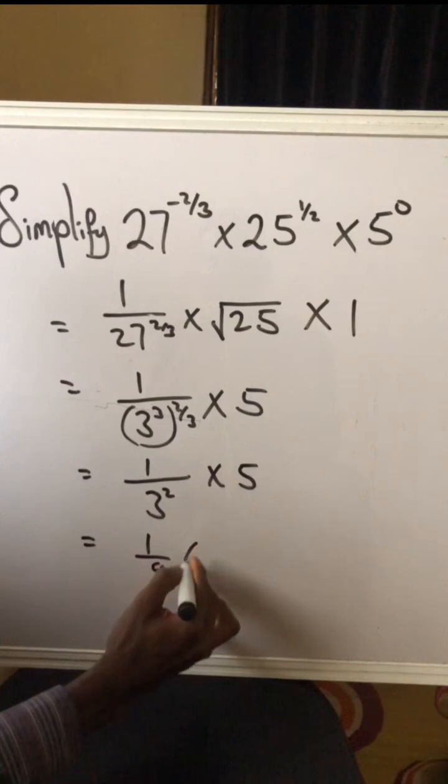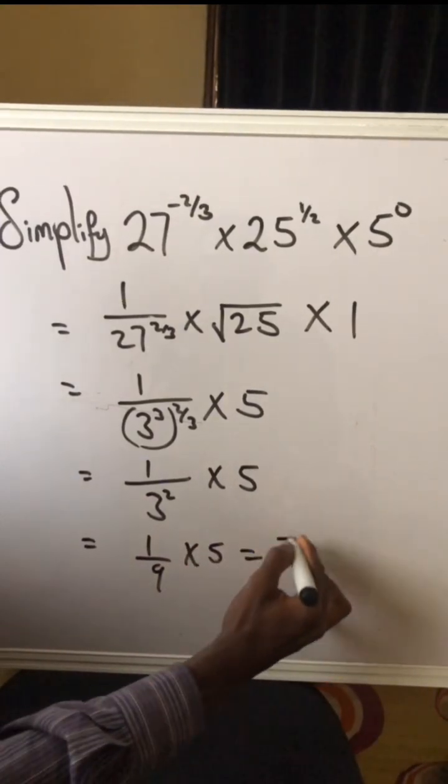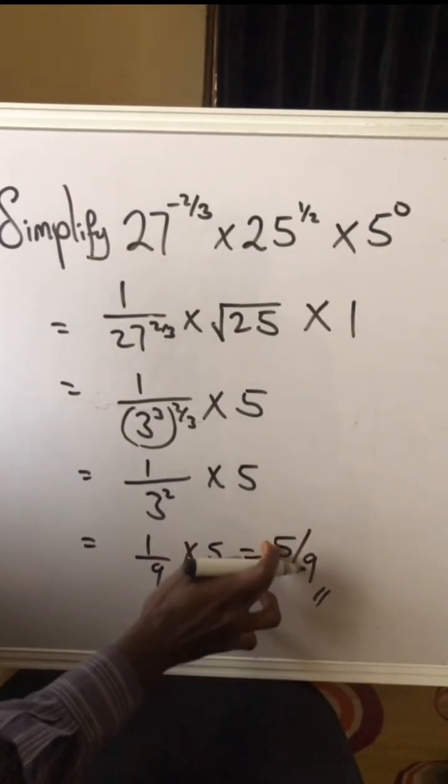This is 1 over 9 times 5, which equals 5 over 9. This is the final answer. I will see you in the next one, thank you.